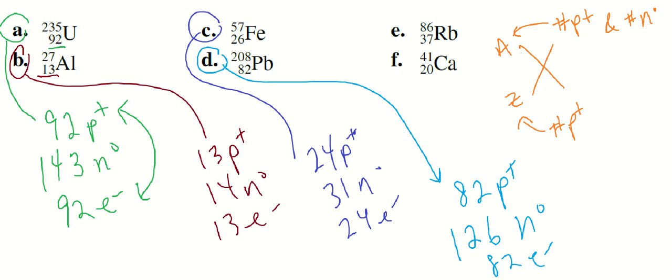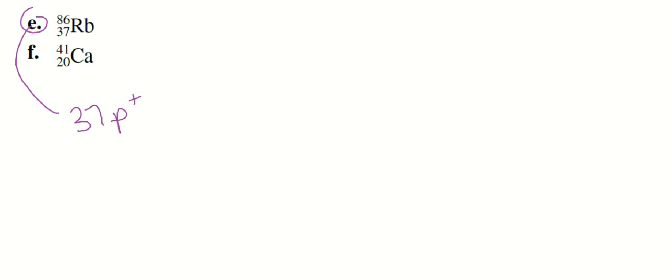Let's copy this here. Rubidium. Thirty-seven protons. Eighty-six minus 37 is 9. It's 49 neutrons. And 37 electrons.